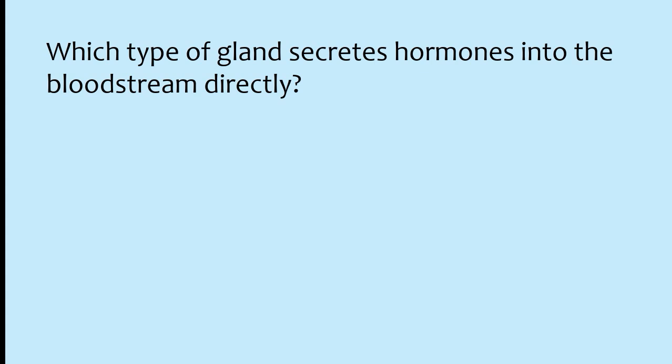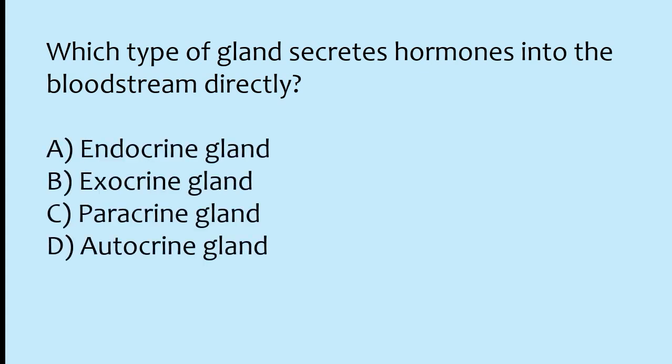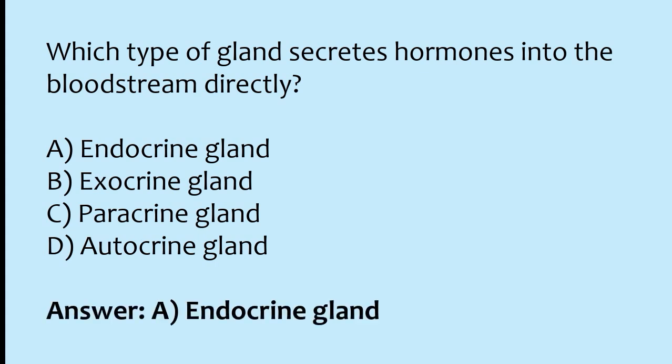Which type of gland secretes hormones into the bloodstream directly? Options: endocrine gland, exocrine gland, paracrine gland, autocrine gland. The correct answer is option A: the endocrine gland is the type of gland which secretes hormones into the bloodstream directly.